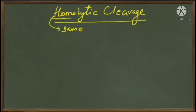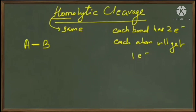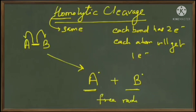For example, if we take a bond A-B, when this bond breaks, each bond has two electrons. Since we have to divide them equally, each atom or species will get one electron. We will draw this with a half arrow, where half means one electron. We get A and B separately, with each one of them having one electron.